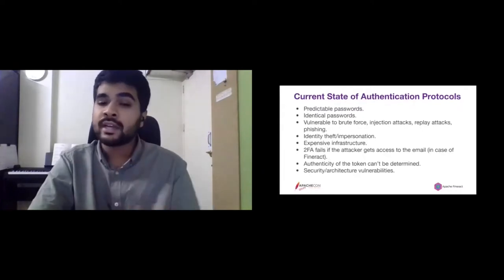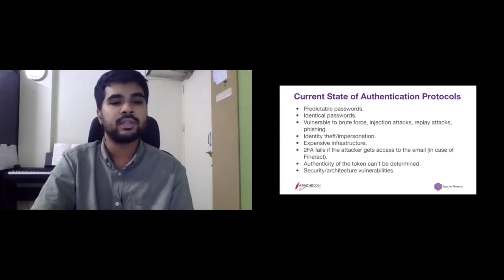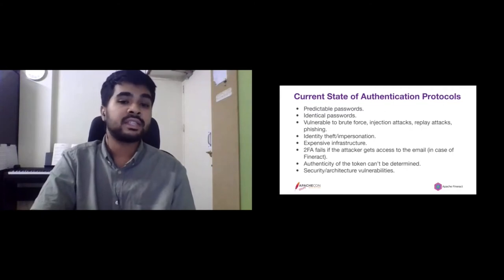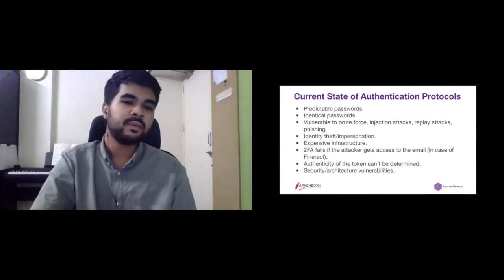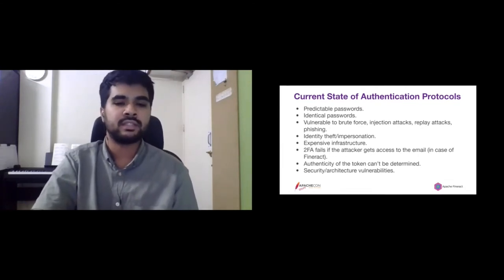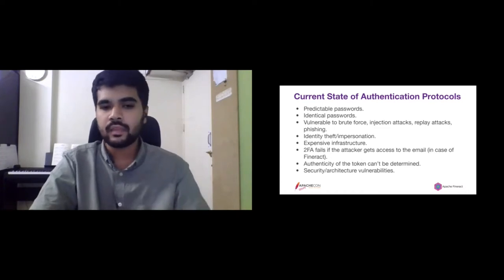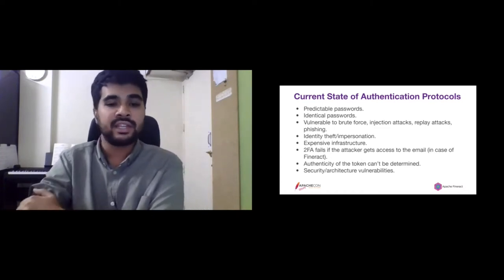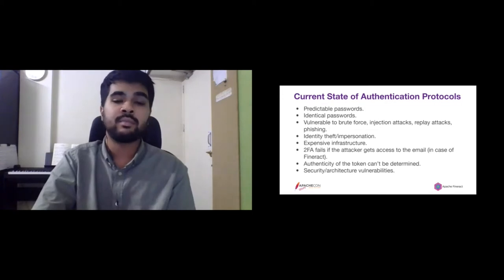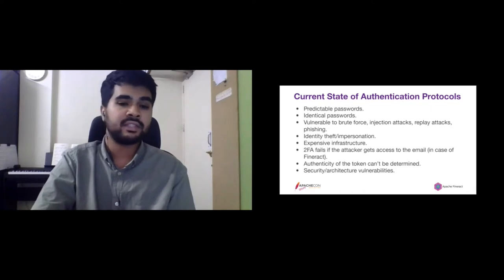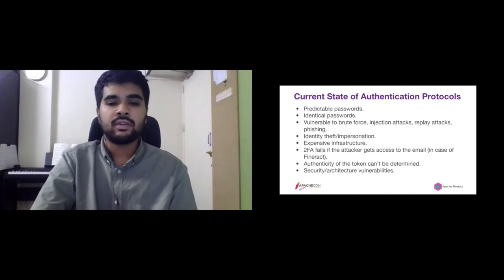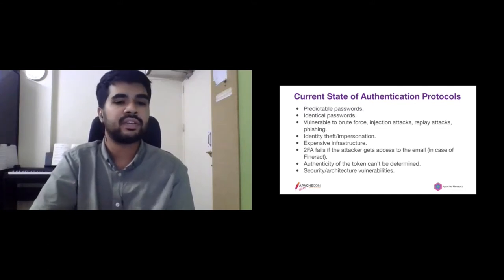Two-factor authentication is not the best in terms of robustness. Attackers can use SIM swapping and gain access to emails. As an extra layer it is good, but the authenticity of the token provided by the service can't be proven by the client. There are existing security vulnerabilities such as OAuth having removed signatures, and in FinRac's case a simple plain text transfer and base64 encoding is used.